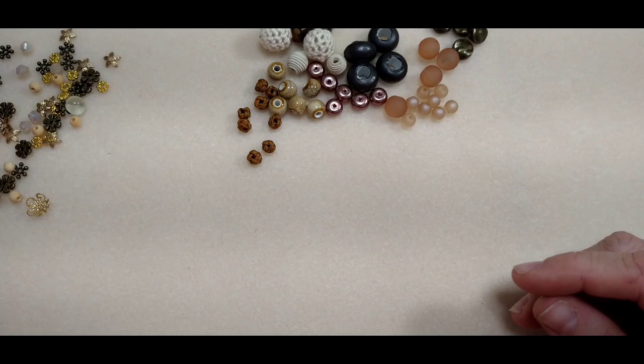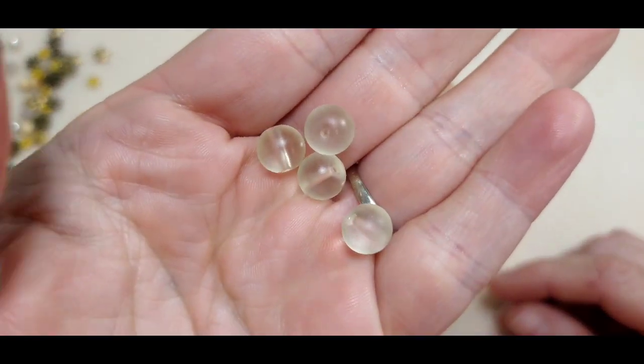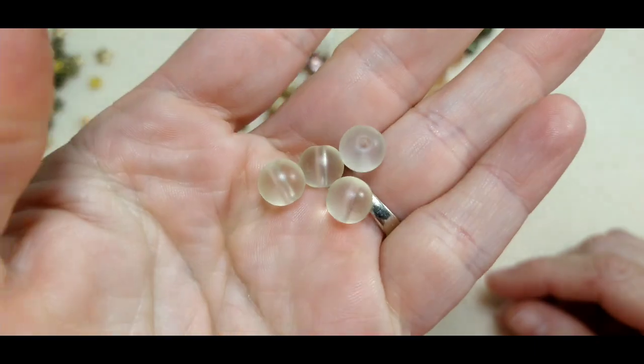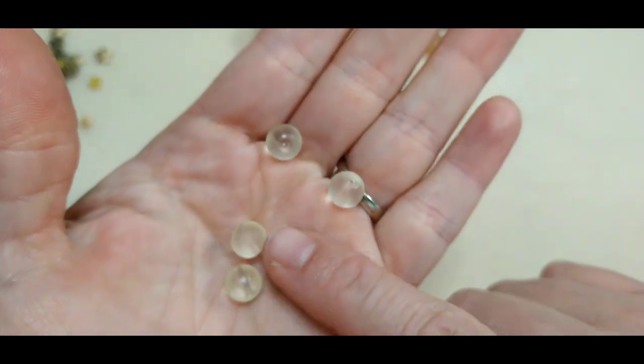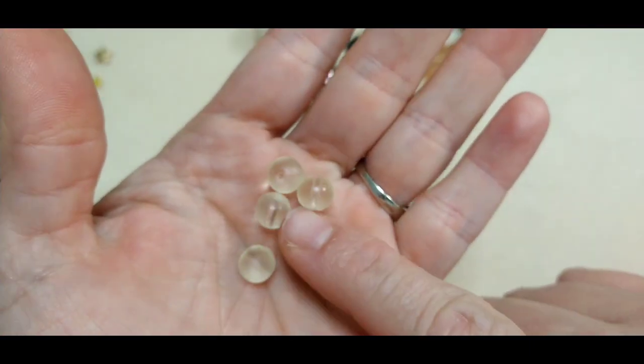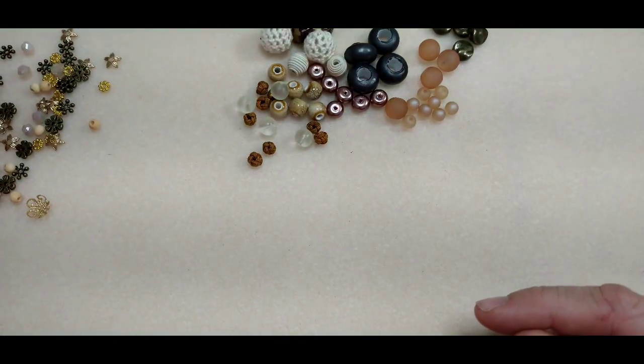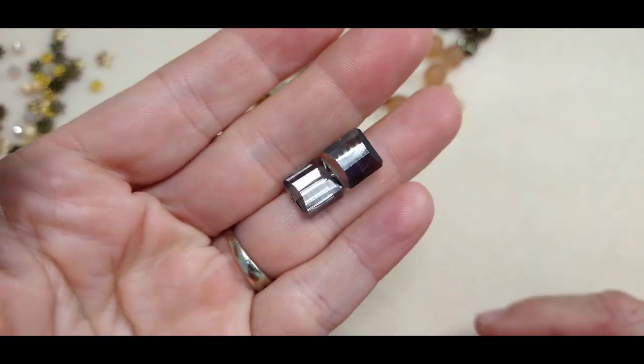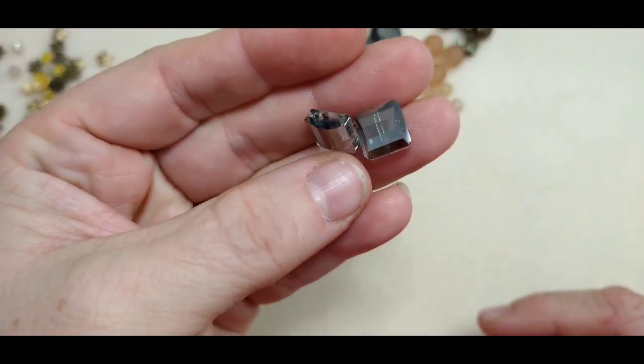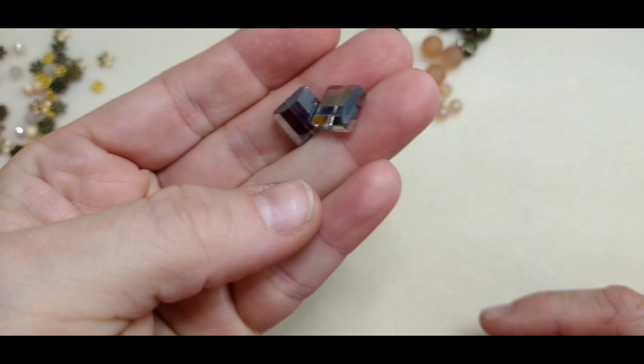We have these really pretty kind of glass beads that are not really transparent but not really frosted. They're kind of in between, they're really cool. We have a couple of really pretty crystals. These are square, they're drilled top down, so not diagonal. Really pretty.